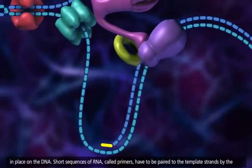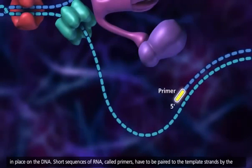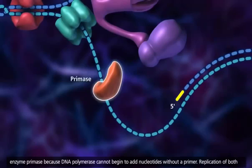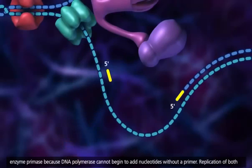Short sequences of RNA, called primers, have to be paired to the template strands by the enzyme primase, because DNA polymerase cannot begin to add nucleotides without a primer.